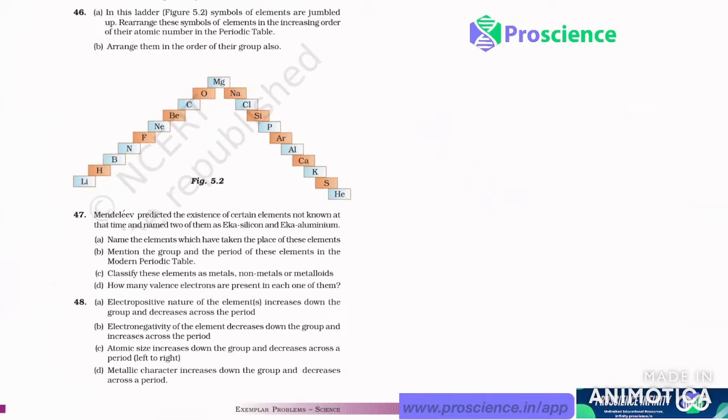In this ladder, symbols of the elements are jumbled up. Rearrange these symbols of elements in the increasing order of their atomic numbers in the periodic table. Arrange them in order of their groups also.